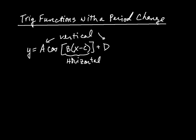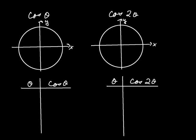We're going to start off with a simple transformation that is only one of these numbers — we're going to see trig functions with a period change. It turns out, out of all these letters, we're just going to have a B. Let me show you what I'm talking about here. Let's take an example. So I have two functions up here: first, cosine of theta — plain old cosine that you know and love — and over here, cosine of two theta.